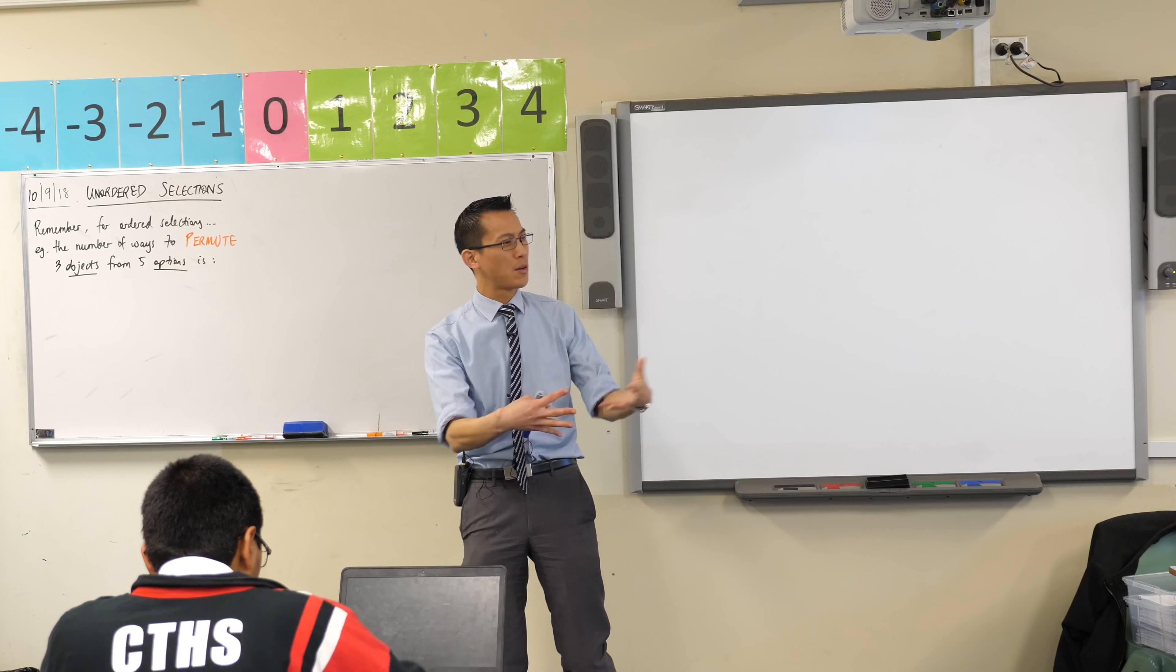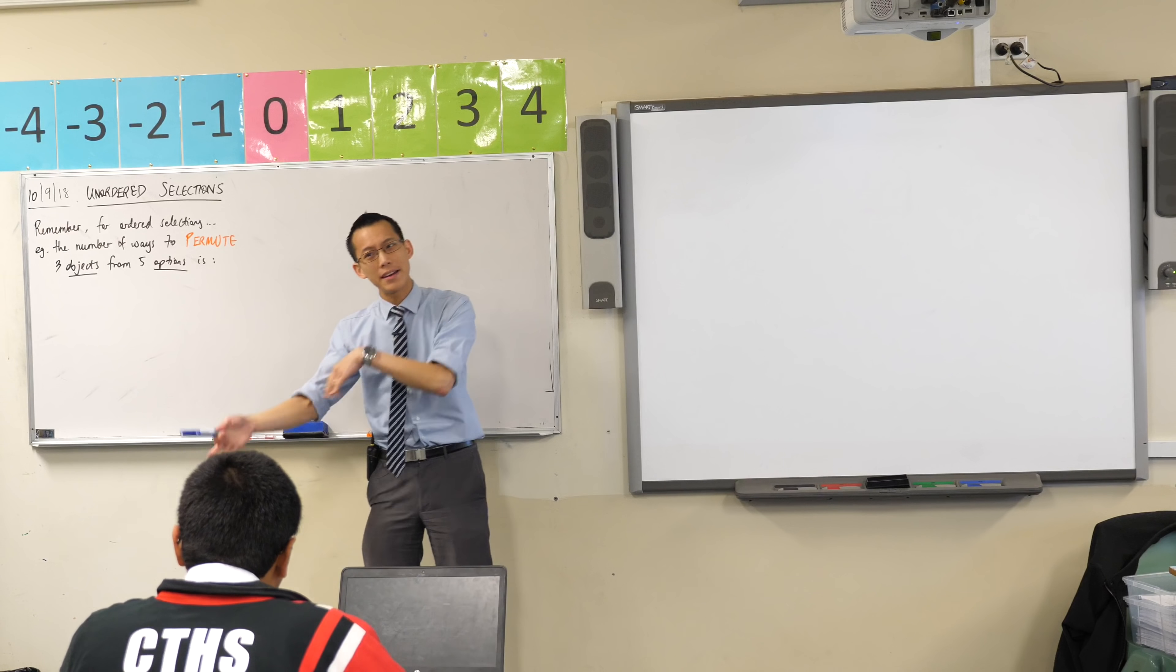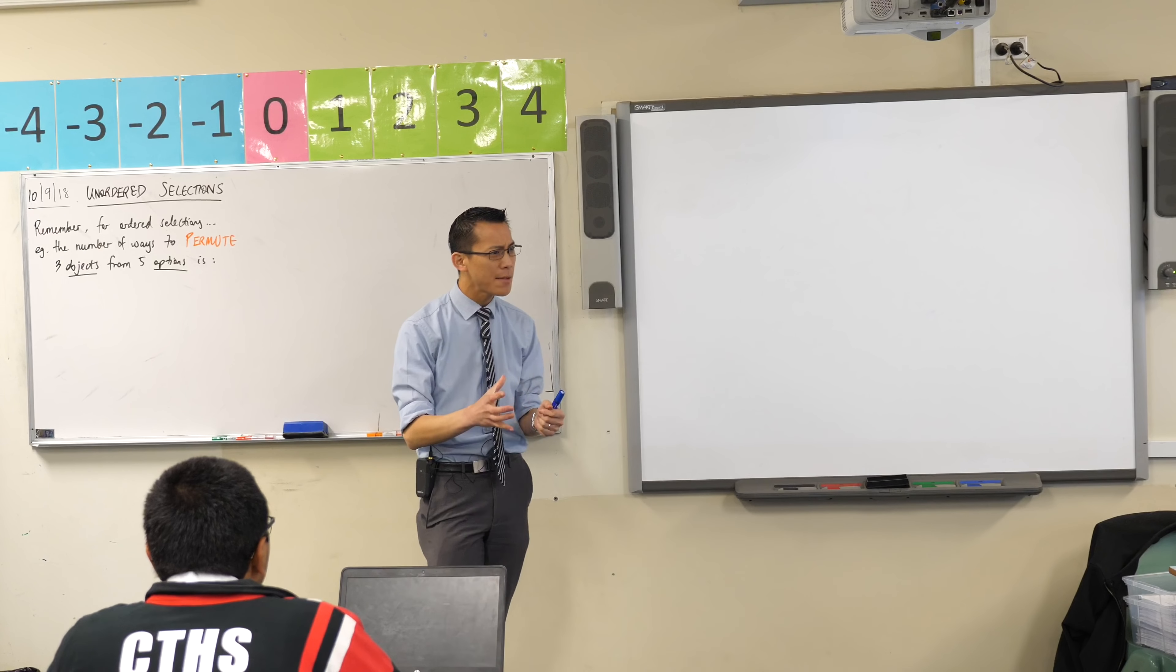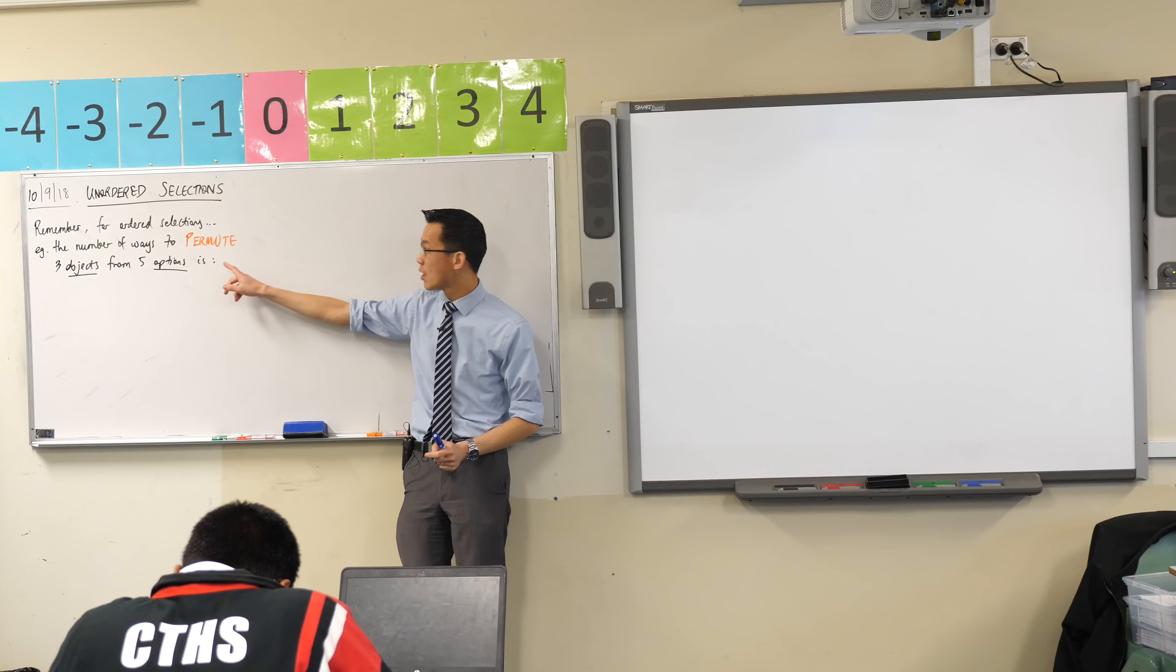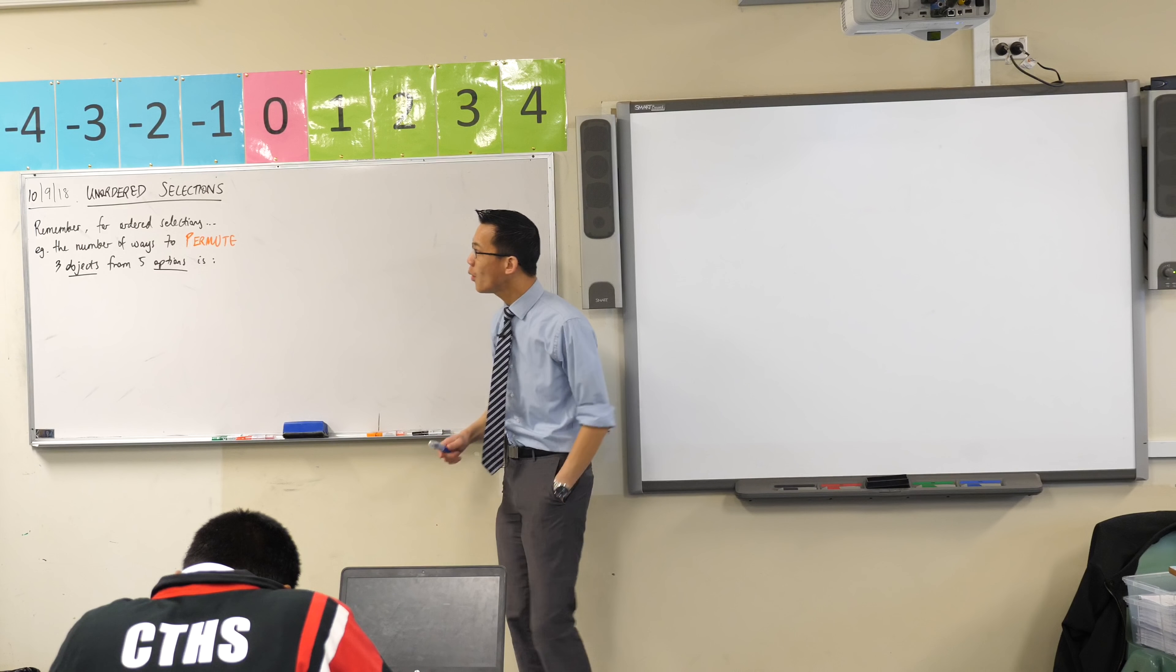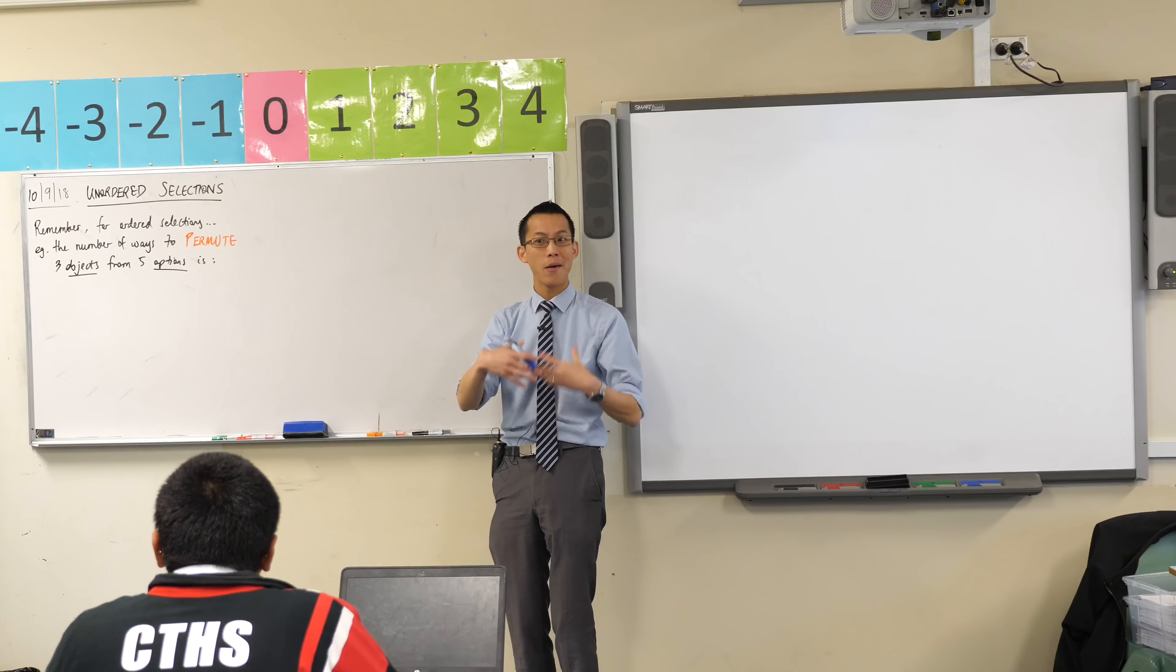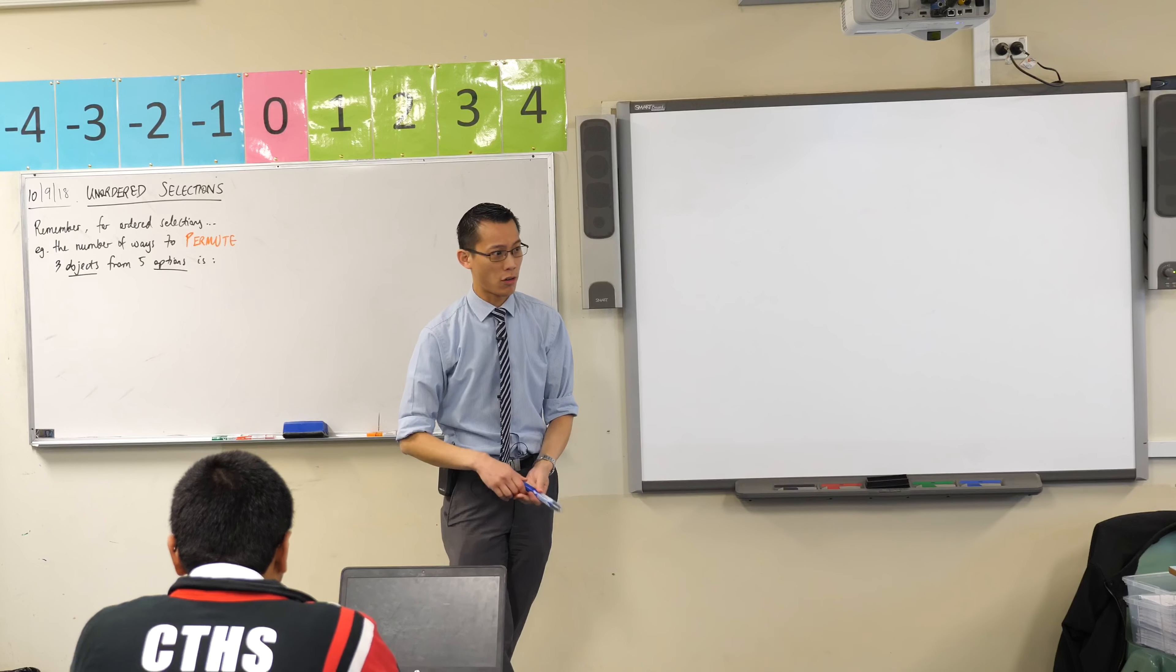In order to unpack what we're talking about here by unordered selections, let's rewind a little bit and call on the knowledge we know about ordered selections. By the way, we had a fancy name for ordered selections. We call these permutations, right? Permutations where the order is important. So for ordered selections we might ask a question like this: What's the number of ways to permute, to arrange where order matters, three objects when you have five options to choose from?